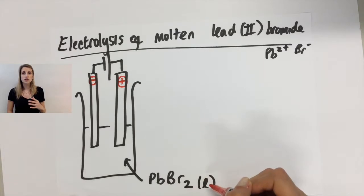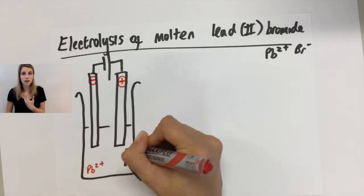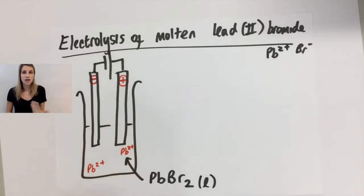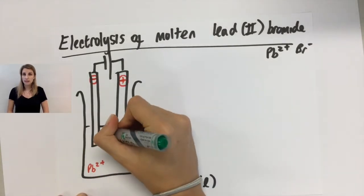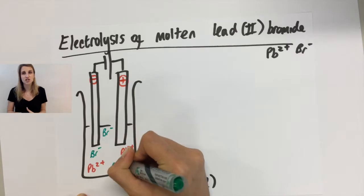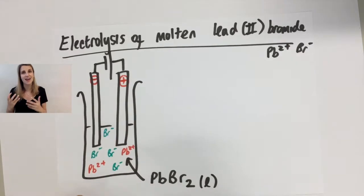What you've got is your lead bromide as your electrolyte. But I've already said that it's a liquid, which means that actually what it exists as is lead 2+ ions and bromide 1- ions. So this is a better representation of what it looks like in that liquid.